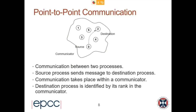Point-to-point communications is the most basic communication mode available in MPI, and also the most commonly used — the simplest way of doing things. As you might expect, this is a communication explicitly between two processes: some source process that sends a message to some destination process anywhere in the communicator. Communication takes place within the communicator, and we'll talk a bit about defining different communicators in the next lecture.